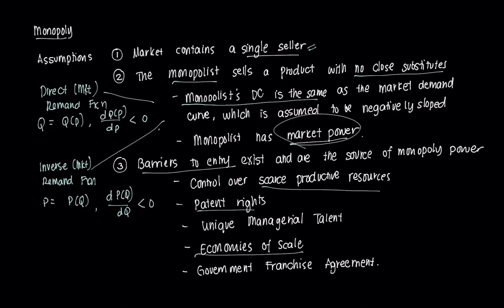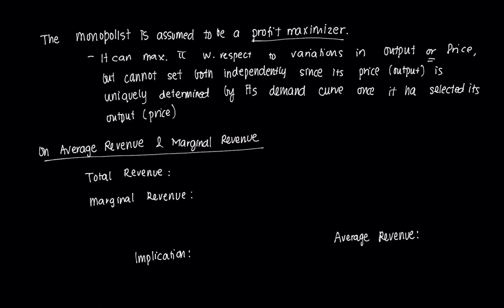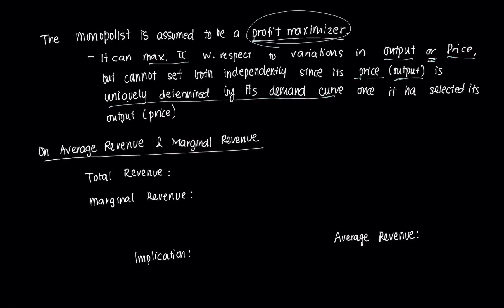Let's now go on to how a monopolist sort of thinks or how it behaves. The monopolist is assumed to be a profit maximizer — it tries to maximize its profit like a typical firm. It can maximize profit with respect to variations in output or price. But it cannot set both independently, since if it chooses to set its price, its output is uniquely determined by the demand curve. On the other hand, if the monopolist sets its output, its price will be determined by its demand curve. So it cannot set both independently — one is dependent on another. Hence, we have the direct and the inverse demand functions that we talked about earlier.